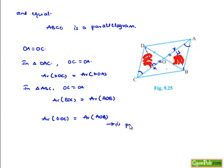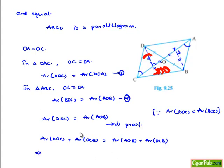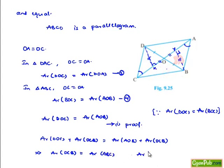Since area of triangle DOC equals area of triangle BOC, let these be equation 3 and equation 4. Adding the area of triangle OCB on both sides gives area of triangle DOC plus OCB equals area of triangle AOB plus OCB, which means area of triangle DBC equals area of triangle ABC. This is the required proof. Thank you.